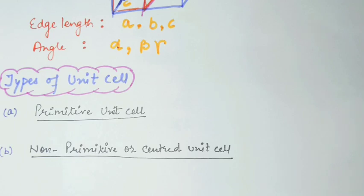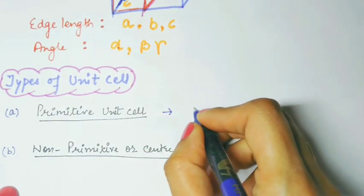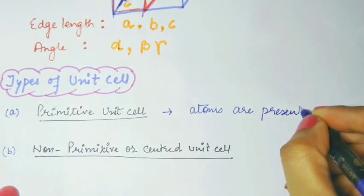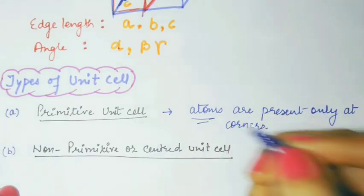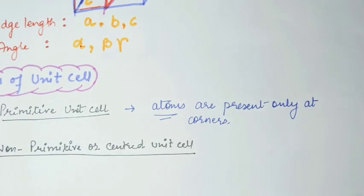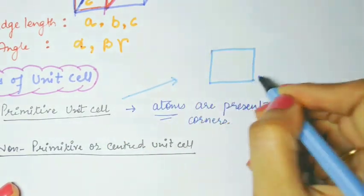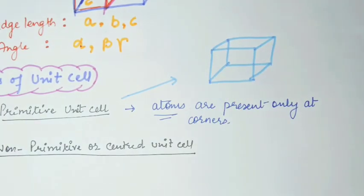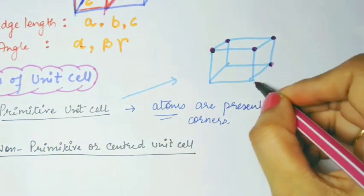Next we'll discuss the types of unit cell. We have two types: number one is the primitive unit cell. The primitive unit cell is one in which atoms — or constituent particles — are present only at the corners. This crystal cube has atoms only at the corners; these are the corners of the cube.